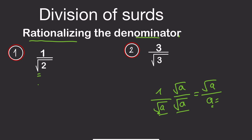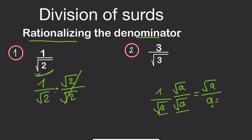To rationalize the denominator, we need to multiply the numerator and the denominator by the square root of 2. If we multiply by root 2 over root 2, it doesn't change anything — root 2 divided by root 2 gives us 1, so I have not changed anything in the equation.